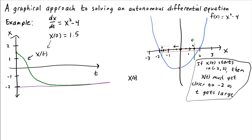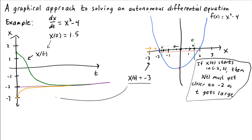What would happen if we chose the initial condition x of 0 equals negative 3? That means we start at negative 3, where f is large and positive. Plotting the solution in orange: I start at negative 3 and need to increase quickly because f is very large there. So on the x-t plot I'm moving upward fast. But again, as I approach negative 2, I slow down, getting closer and closer to negative 2 as time increases. So just by looking at the graph of f of x, if x of 0 is negative 3, x should increase toward negative 2 but never quite reach it.